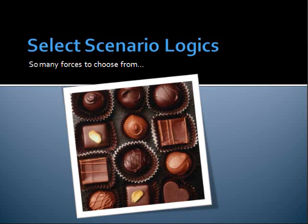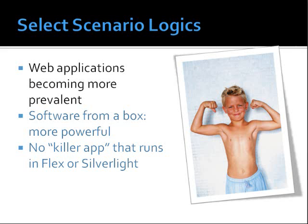After we identified local and macro forces and ranked them, let's select a few of them to flesh out in a scenario matrix. The three top forces I identified were: web applications becoming more prevalent, like TurboTax, Salesforce.com, and Google Docs; number two, software from a box is more powerful than software over the web; and the third one was there's currently no killer app that runs in Flex or Silverlight.